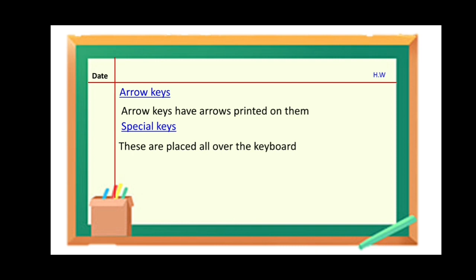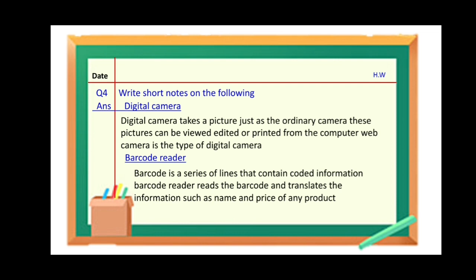Question number four: Write short notes on the following. Digital camera: A digital camera takes a picture just as an ordinary camera. These pictures can be viewed, edited, or printed from the computer. A web camera is a type of digital camera. Barcode reader: A barcode is a series of lines that contains coded information. A barcode reader reads the barcode and translates the information such as the name and price of any product.